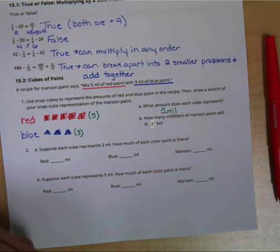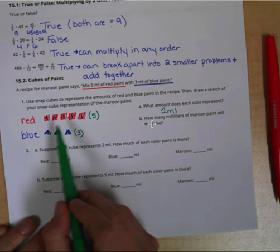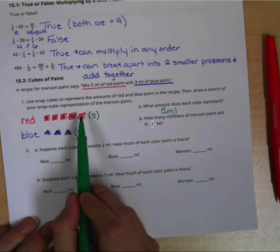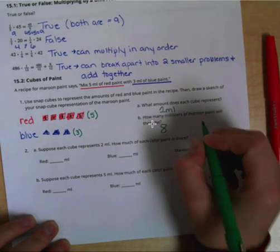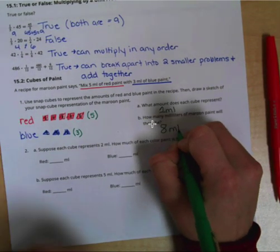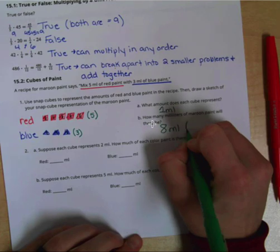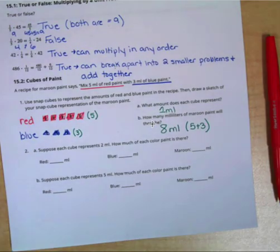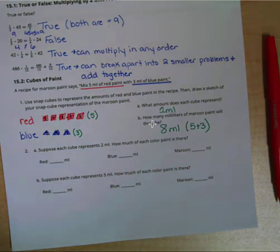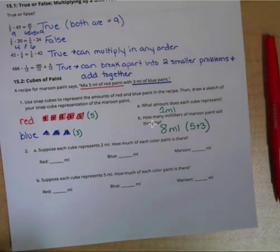How many milliliters of maroon paint would there be? If we mix 5 red and 3 blue together, we would have a total of 8 milliliters of maroon paint — we found that just by adding the amount of red plus blue. Question two says suppose each cube represents 2 milliliters, so this is kind of like when we double a recipe.